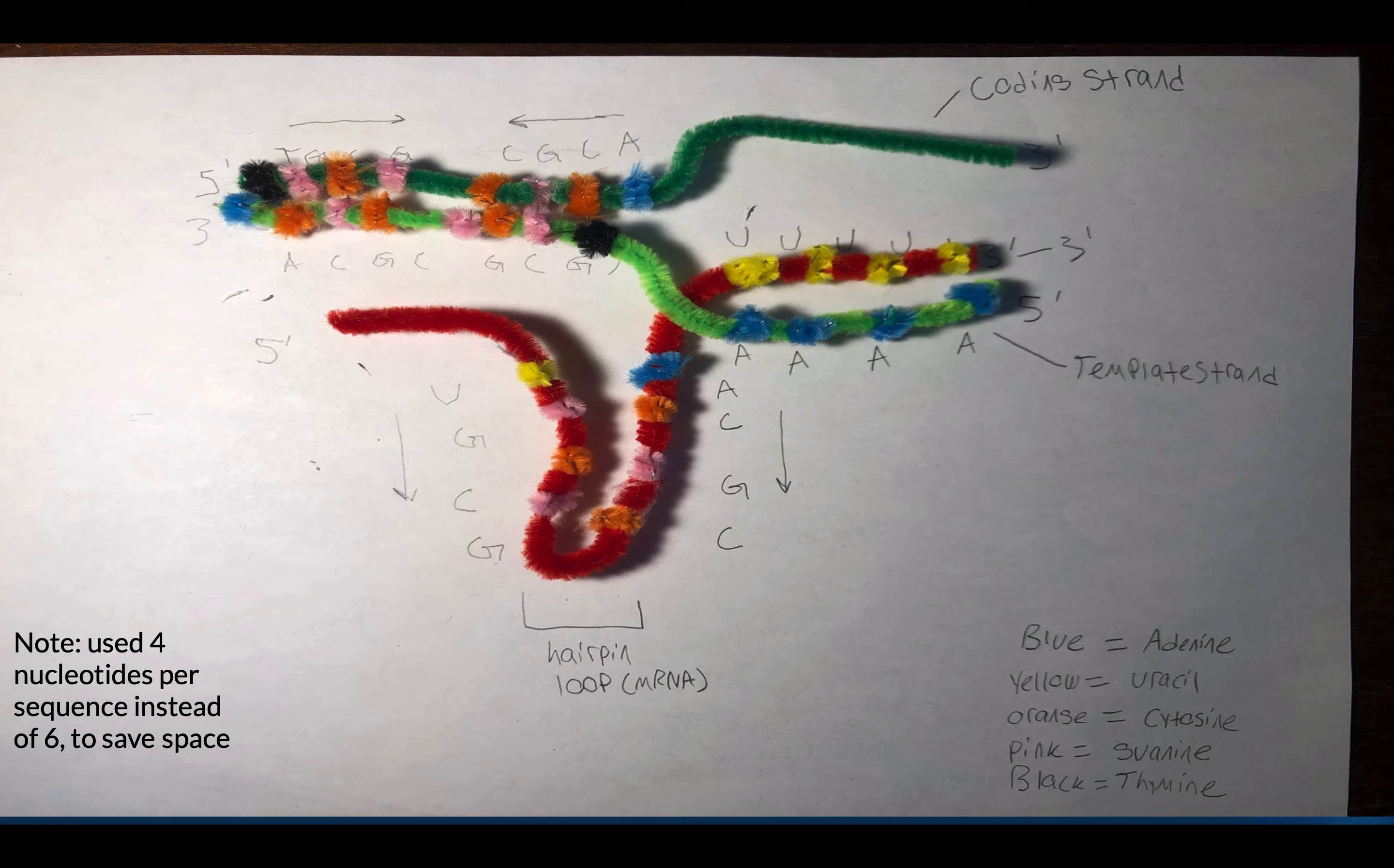With orange C's and pink G's, we see that these sequences are inverted sequences that can cause the mRNA product to fold into itself and create a hairpin molecule.